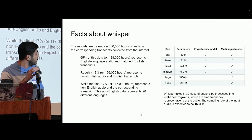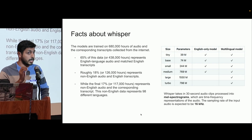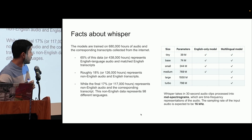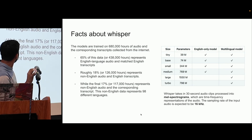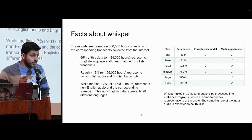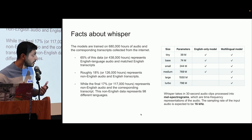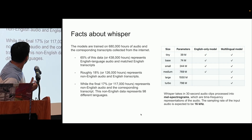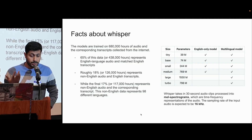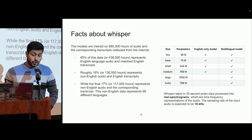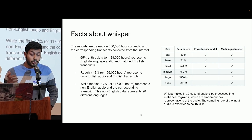The Whisper model has been trained on 680,000 hours of multilingual data, and it comes in six different sizes, while the Turbo model was released very recently. What most people don't know is how the pre-training was done: 65% of the data is English language audio with English transcriptions. Out of the remaining 35%, roughly 18% is non-English audio with English transcripts, and the final 17% represents non-English audio with corresponding non-English transcripts.